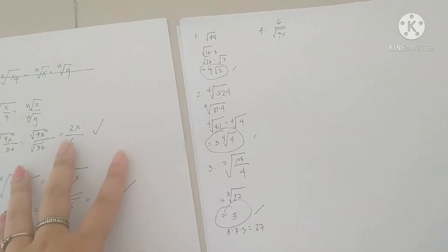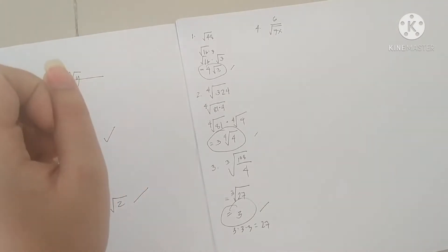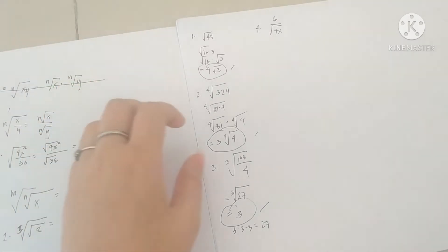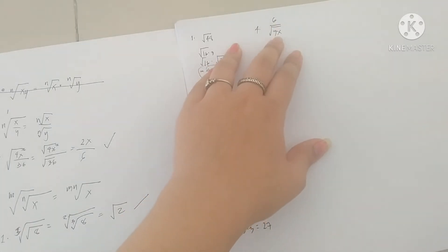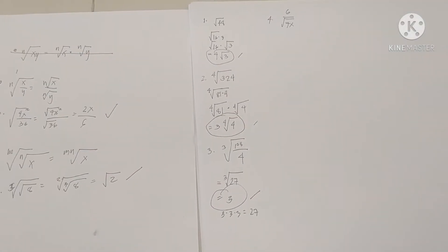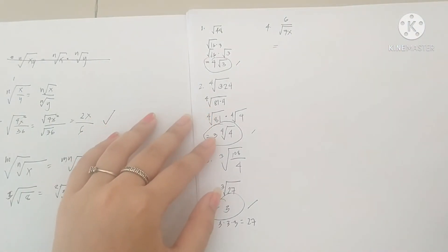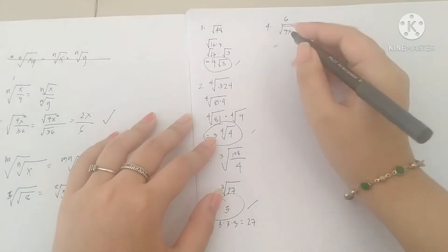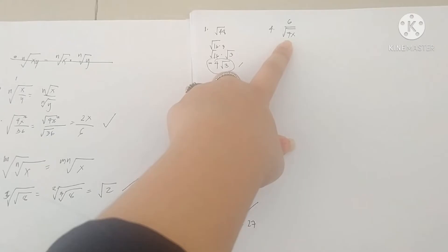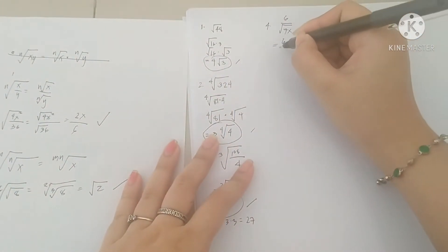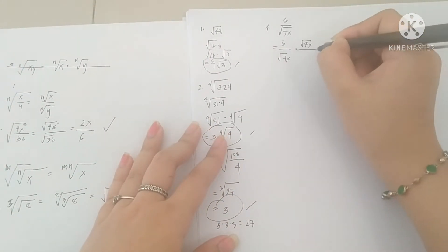Number 4. One of the rules for a simplified expression is that the denominator should not be in radical form. This expression has a radical in the denominator, so it is not simplified yet. We're going to simplify 6 over the square root of 7x. We're going to multiply by square root of 7x over square root of 7x so that the denominator becomes a perfect square.